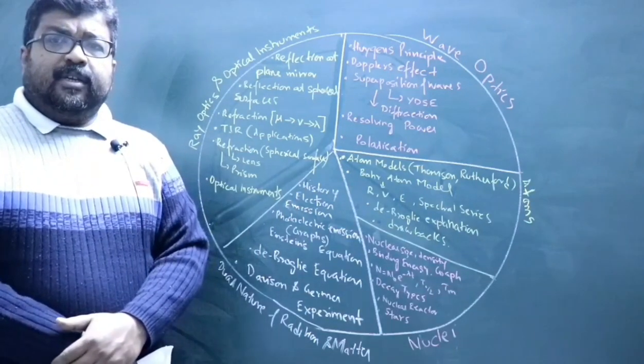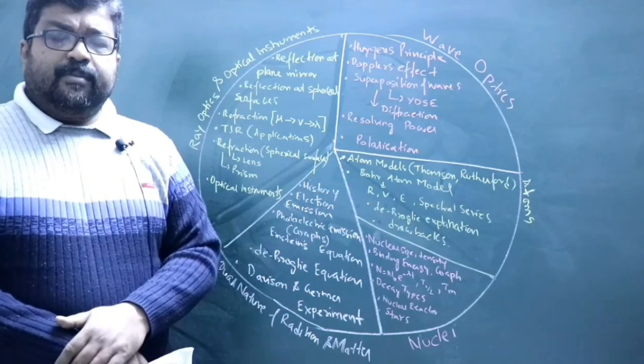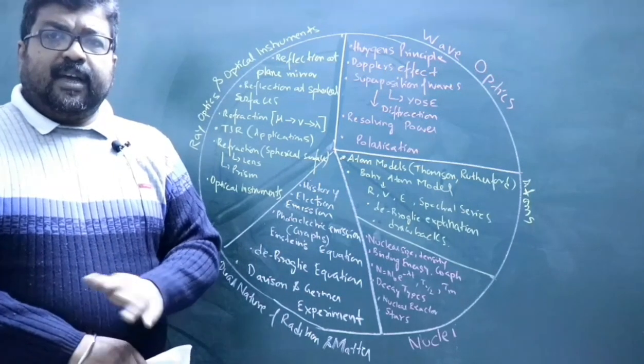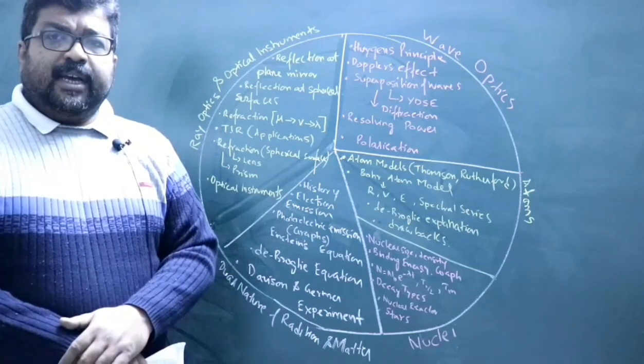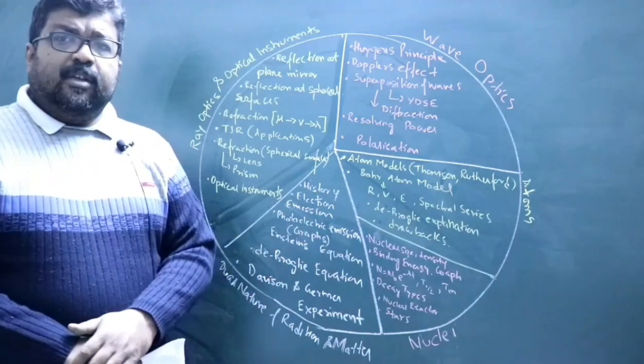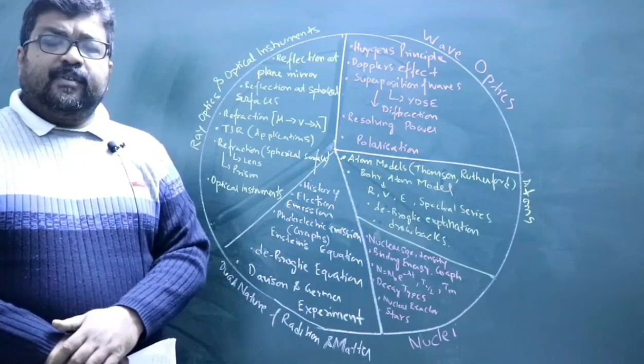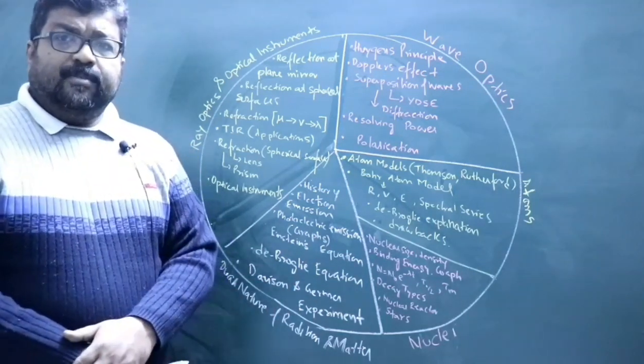Then further discussion of the photoelectric emission - the observations made by Hallwachs and Lenard, the graphs, then the photoelectric emission equation by Einstein. Then the de Broglie equation, the equation for wavelength of electron. Then Davisson and Germer experiment and its critical observations.